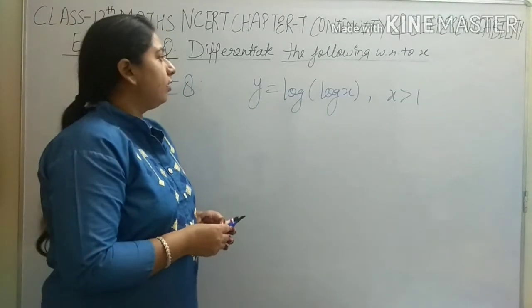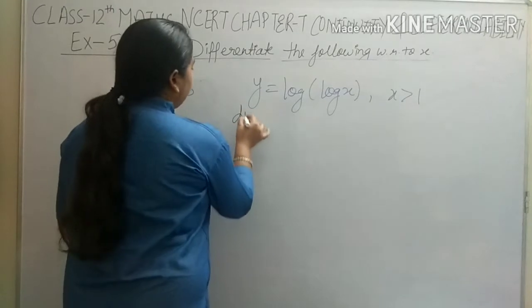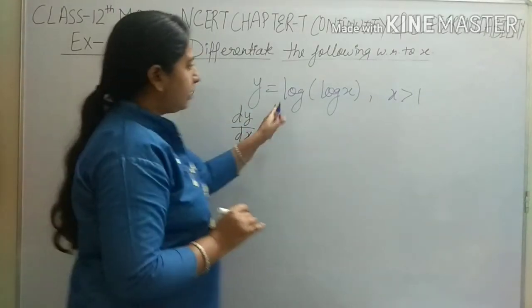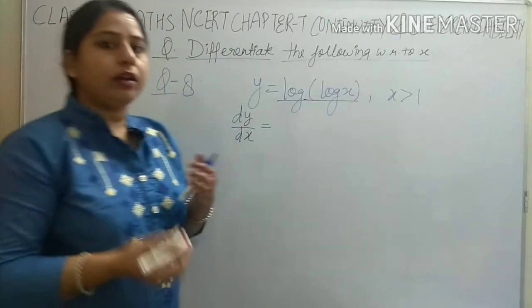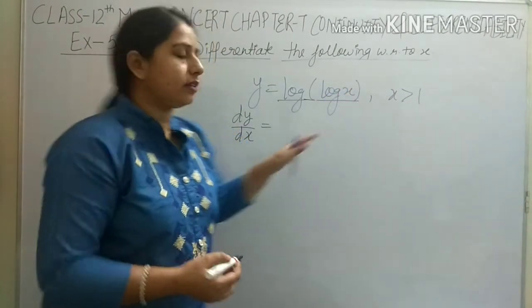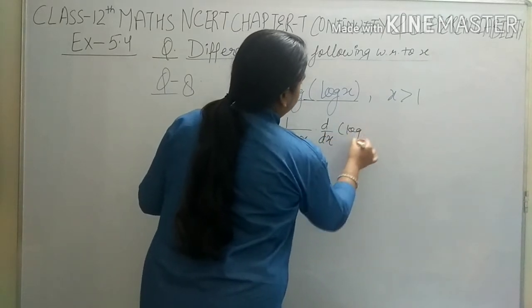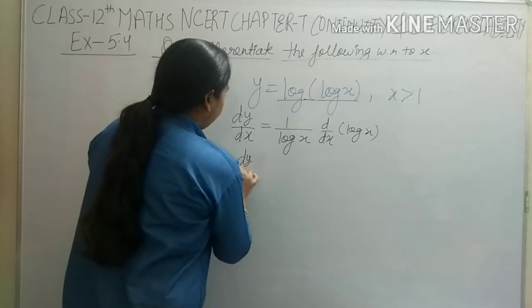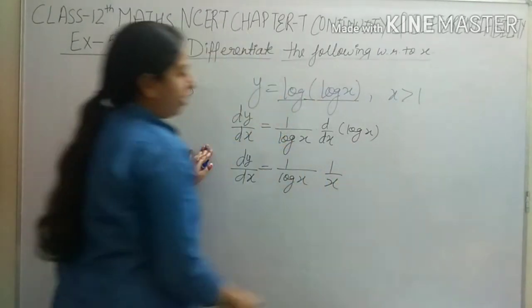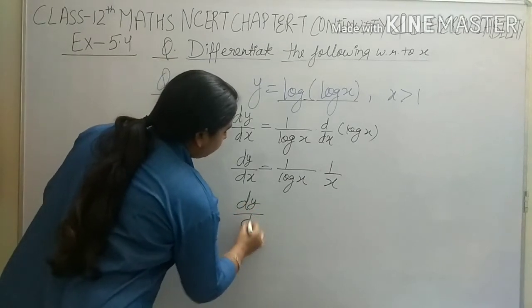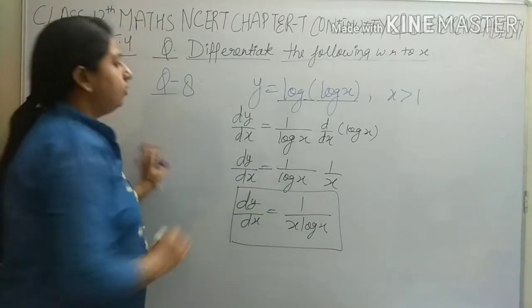Question number 8: y equals log(log x). Differentiate it with respect to x. We will get dy/dx: first differentiation of the outer log gives 1 upon log x (since x here is log x). Now differentiation of log x is 1 upon x. So dy/dx equals 1 upon log x times 1 upon x, which gives 1 upon x·log x. This is the answer.